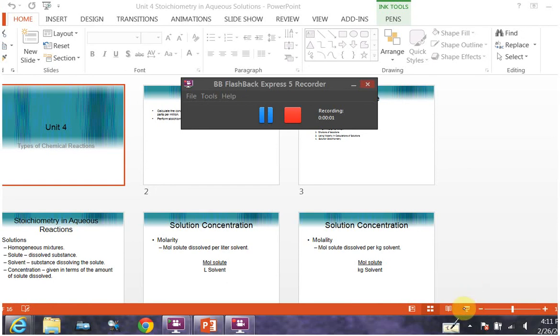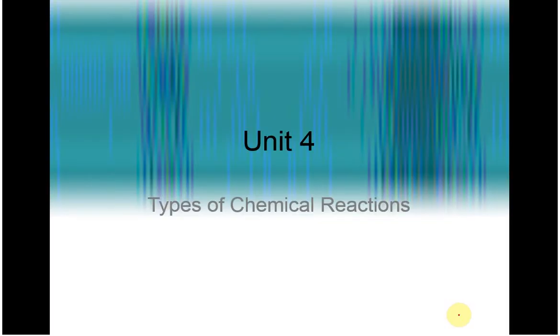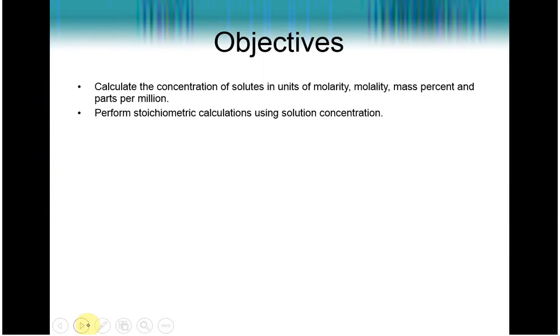Okay, so this is the third installment of Unit 4. This is on solution stoichiometry. Here we're going to look at the concentrations of solutes in solution, and then we're going to look at how to perform stoichiometric calculations for solution concentrations. It's very similar to what we did in Unit 3. It's just that we're adding one different step potentially to our mole concept map.